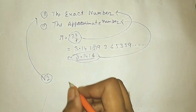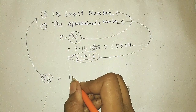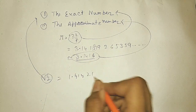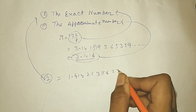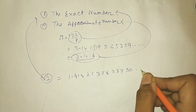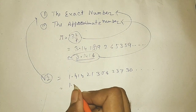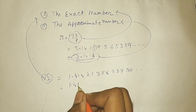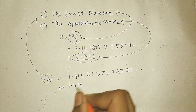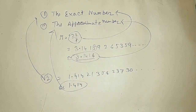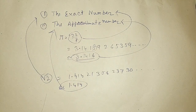Let us take another example: root 2. This root 2 is the exact number. When you convert it into a decimal number, it is also an infinite decimal. So we round it off to, let's say, three decimal places to get the approximate number. I hope you understand the exact number and the approximate number.